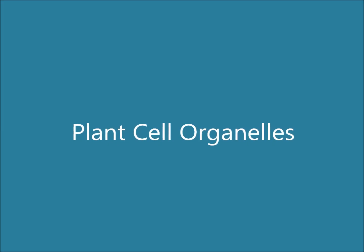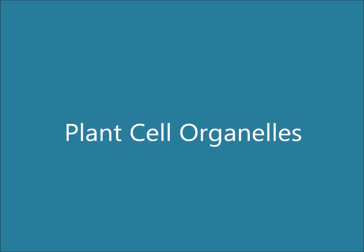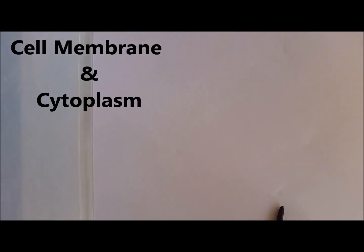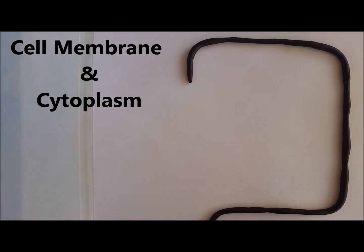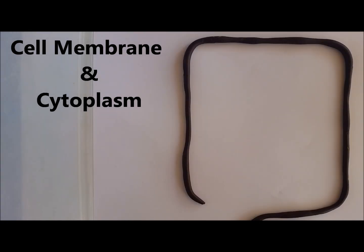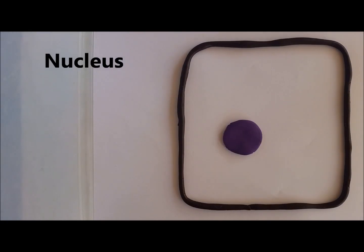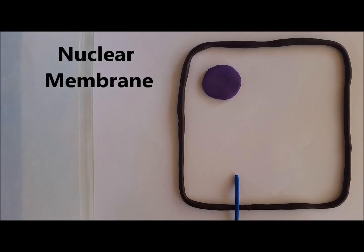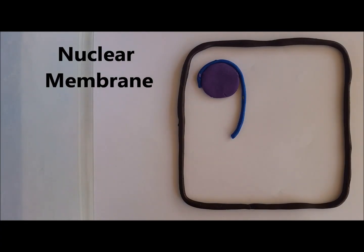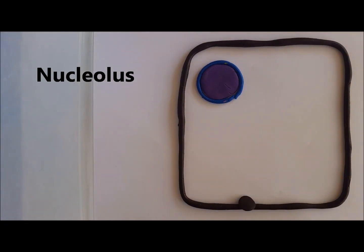Now let's compare the animal cell organelles with the plant cell organelles. Like the animal cell, plant cells have a cell membrane, which is the barrier that controls what can and can't enter, and a cytoplasm, which is the jelly that all the other organelles are suspended in. They also have a nucleus, which is the control center of the cell, a nuclear membrane which surrounds the nucleus and controls what enters it, and a nucleolus which produces ribosomes.